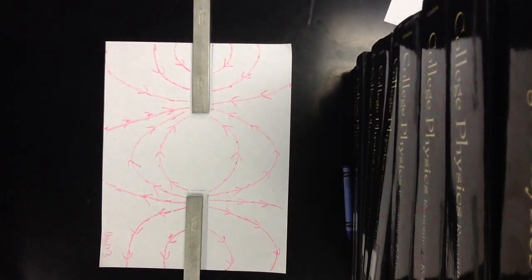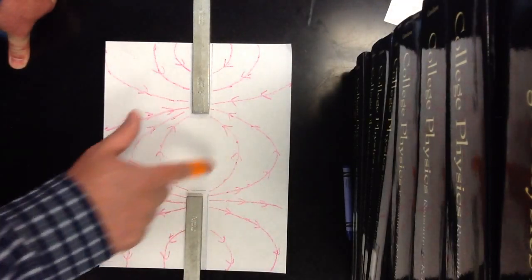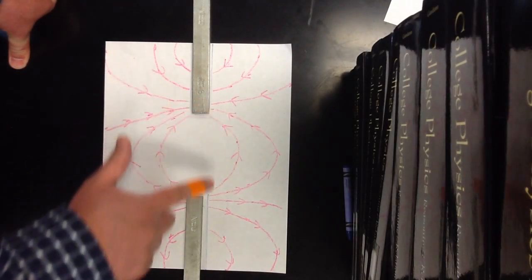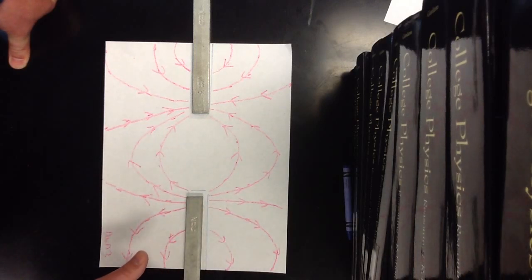And you can see that idea of the field lines going out of a north pole and into a south. It doesn't really discriminate on which north or south pole. These field lines are going from this north pole to this south pole. These field lines are going from this north pole to the south pole over here.